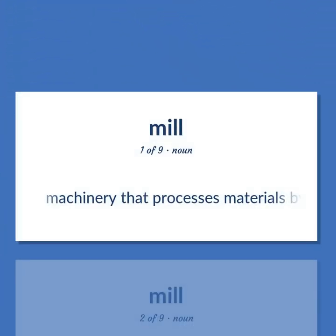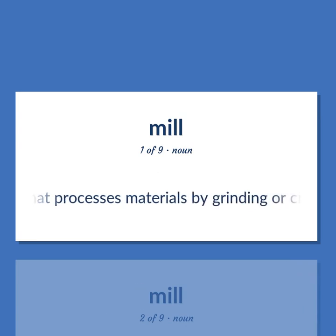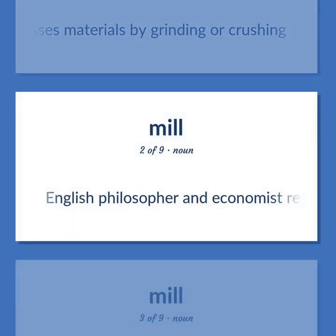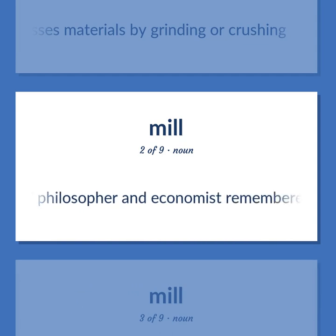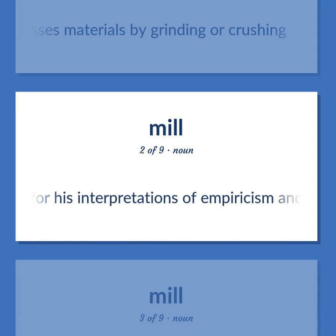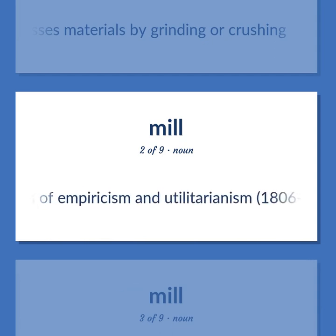Mill: Machinery that processes materials by grinding or crushing. Also, John Stuart Mill — English philosopher and economist remembered for his interpretations of empiricism and utilitarianism, 1806 to 1873.